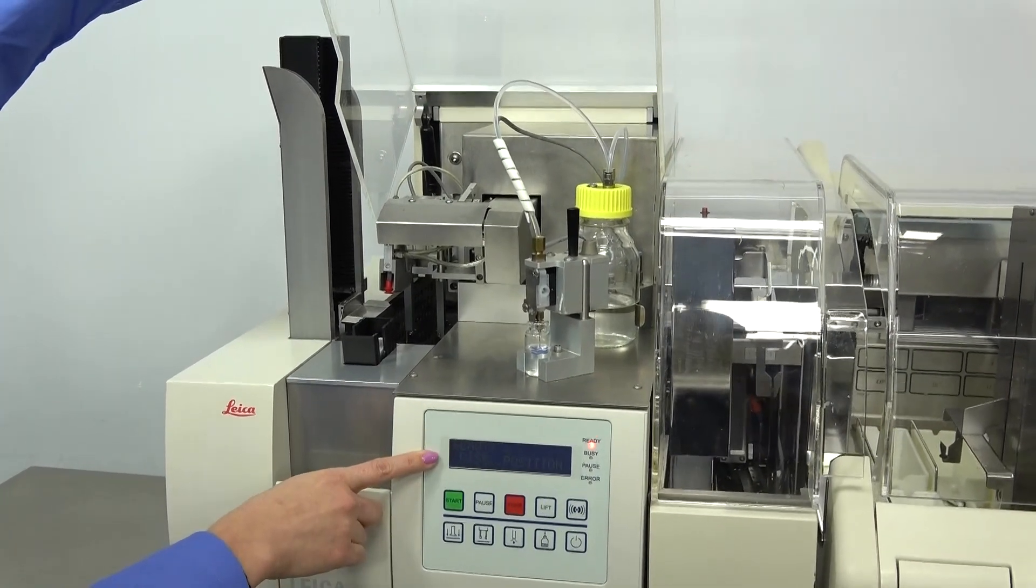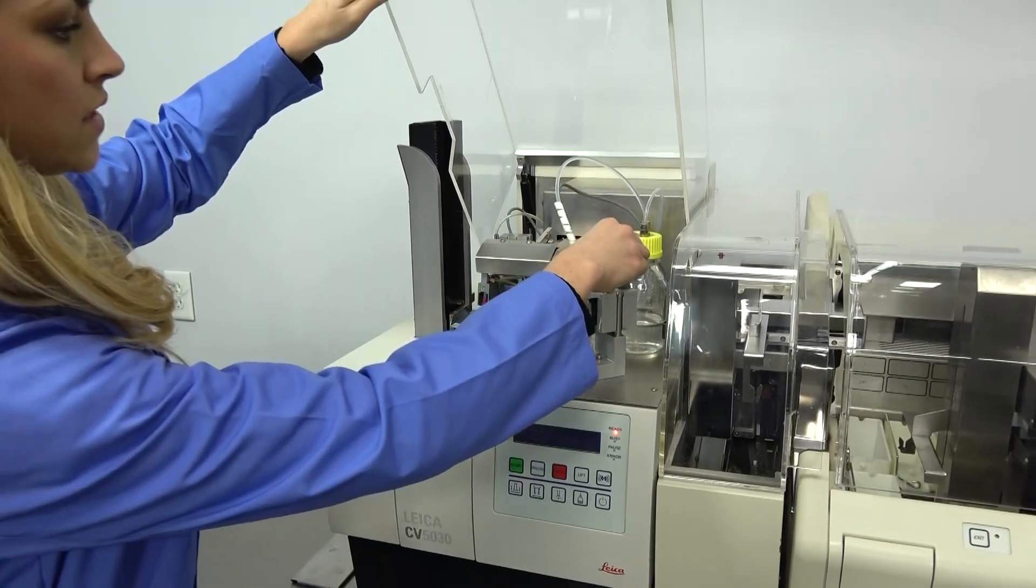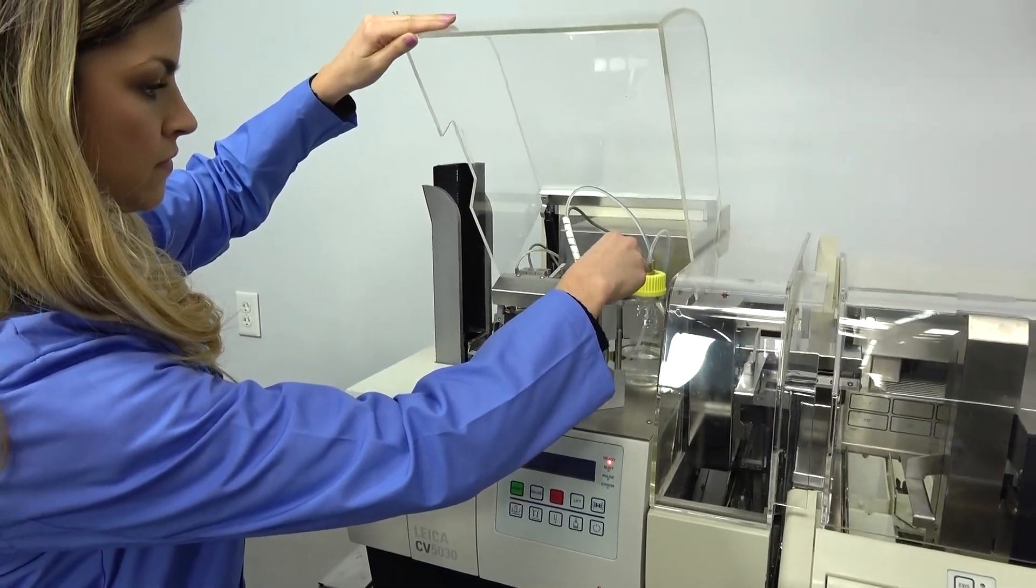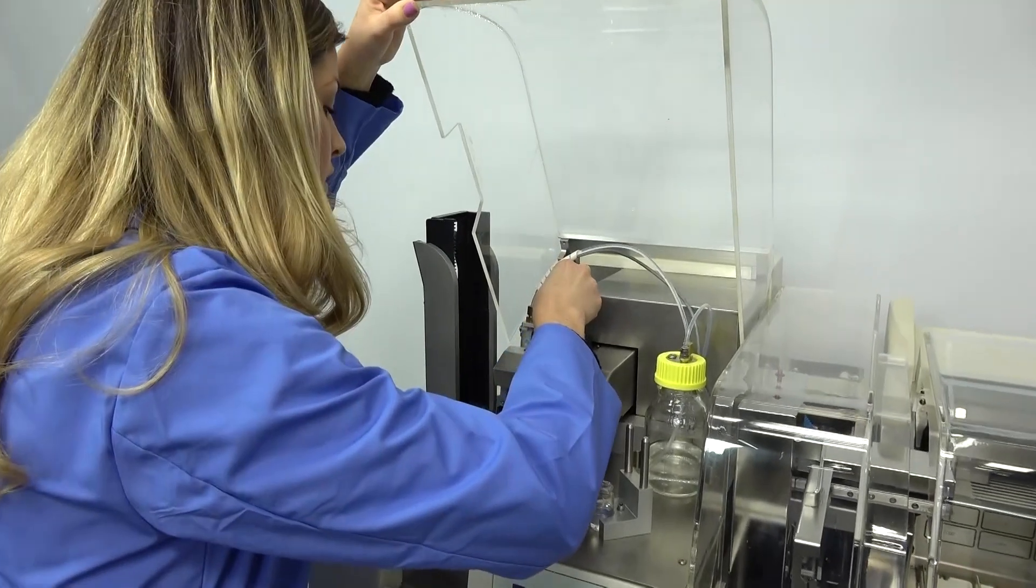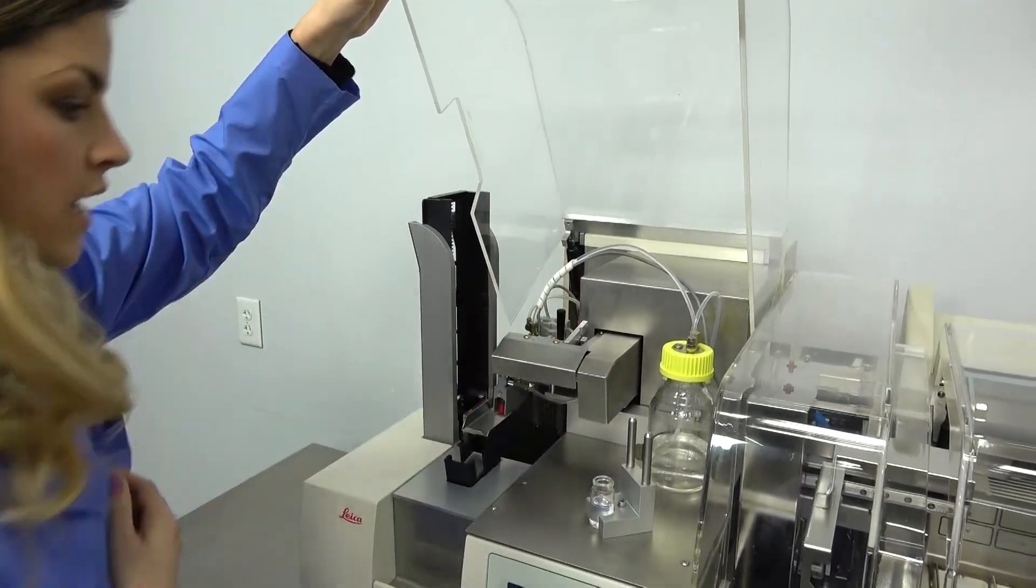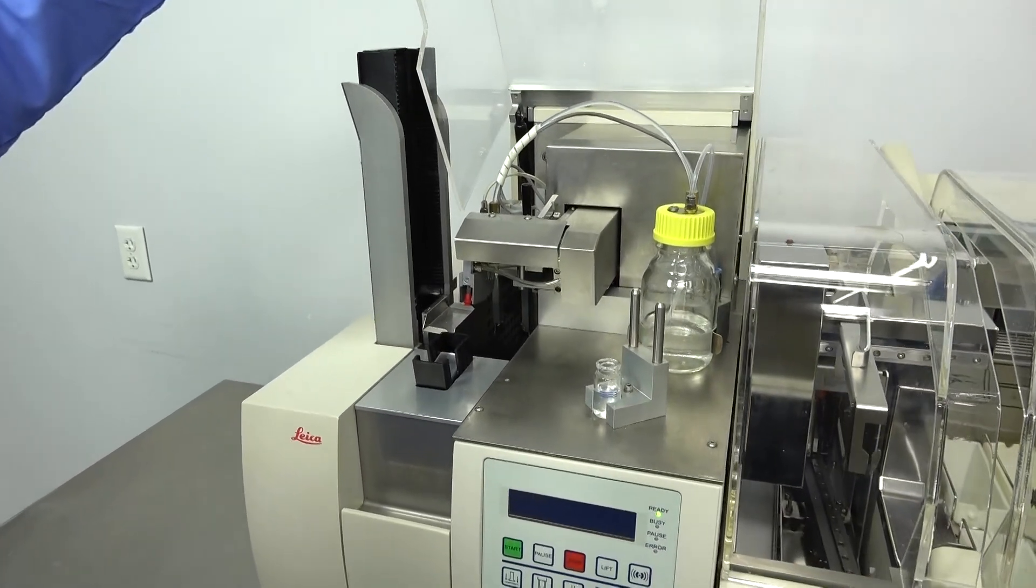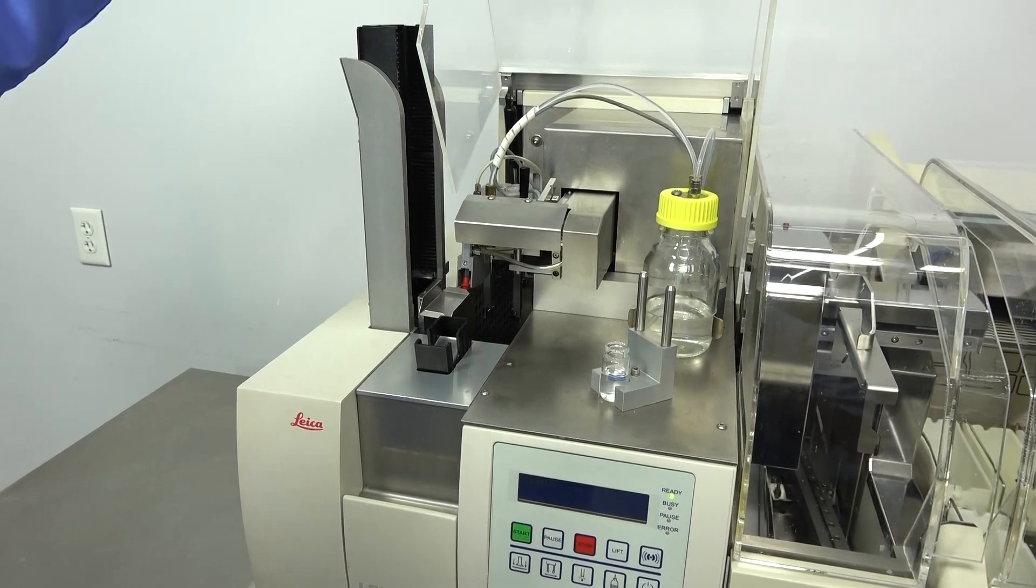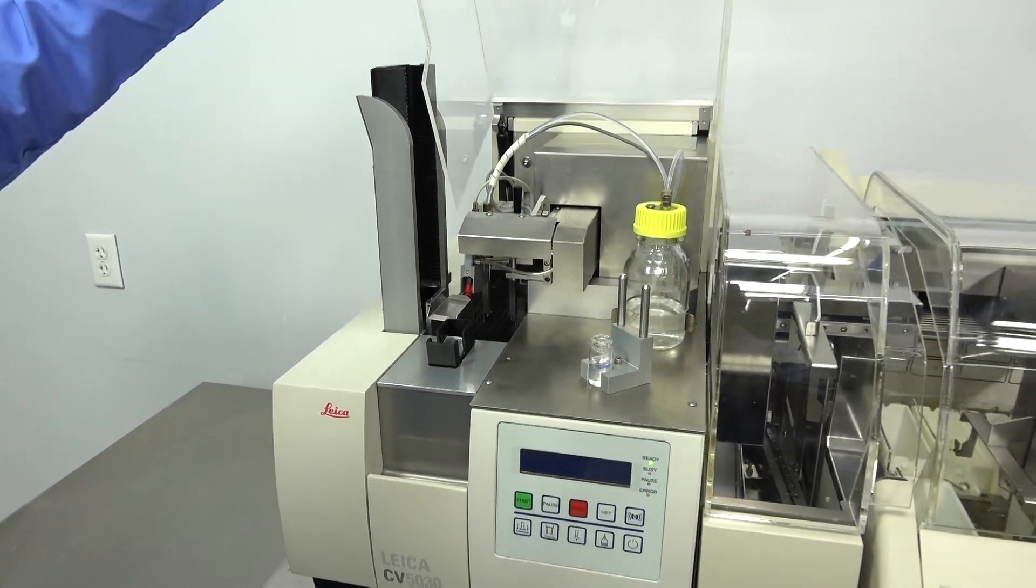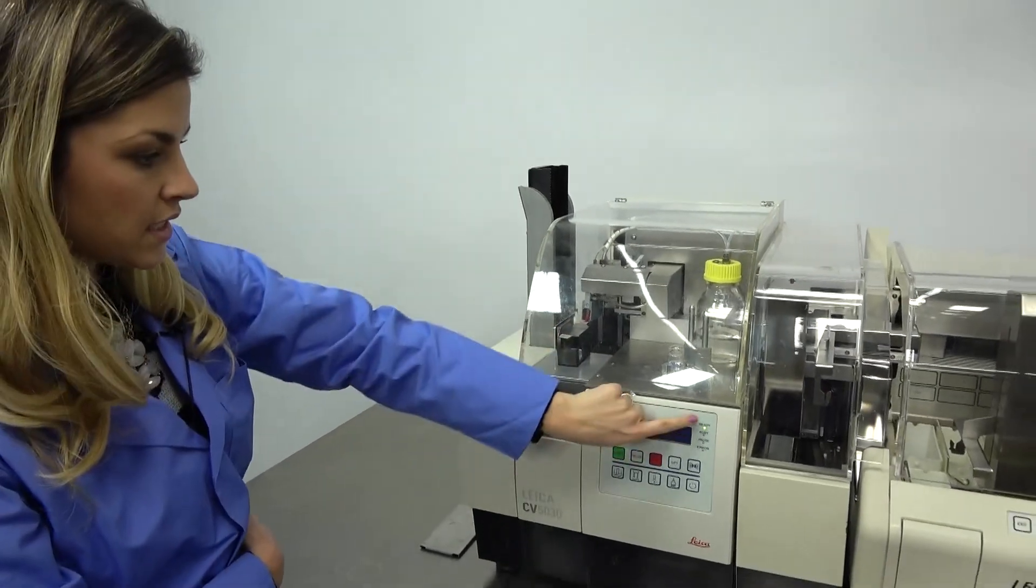Now it's telling me to return it to the dispensing position, which is located in the back. As you can see, this Cover Slipper has been very well maintained. There's not a lot of scratches on any of the hoods and there's no staining within. As we close this lid, now it's telling me that it's ready.